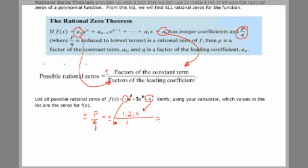Now if I take every possible combination of the top numbers divided by the bottom numbers, that would be plus or minus 1 over 1, 2 over 1, 4 over 1, which is just plus or minus 1, 2, and 4.